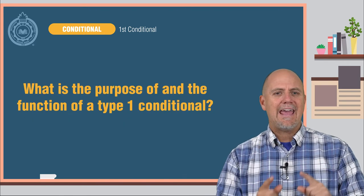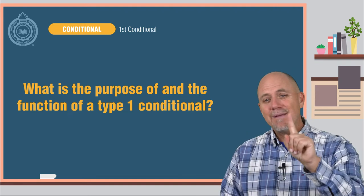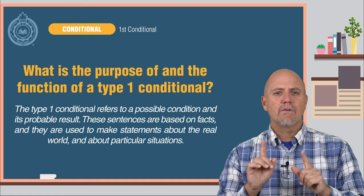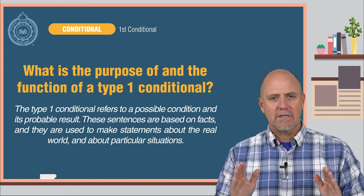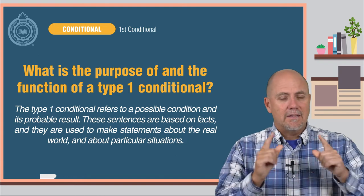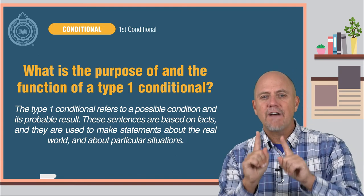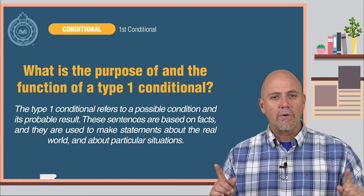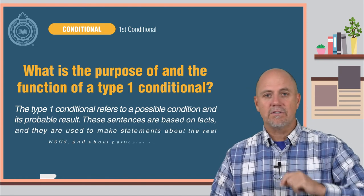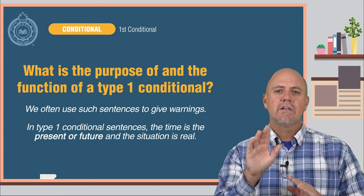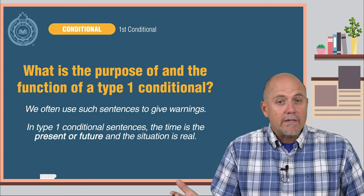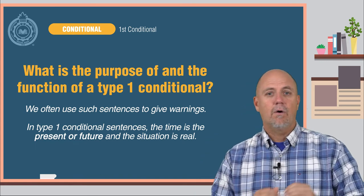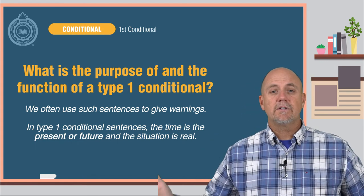What is the purpose and function of a Type 1 conditional? The Type 1 conditional refers to a possible condition and its probable result. These sentences are based on facts, and they are used to make statements about the real world and about real particular situations. We often use such sentences to give warnings. In Type 1 conditional sentences, the time is the present or future and the situation is real.